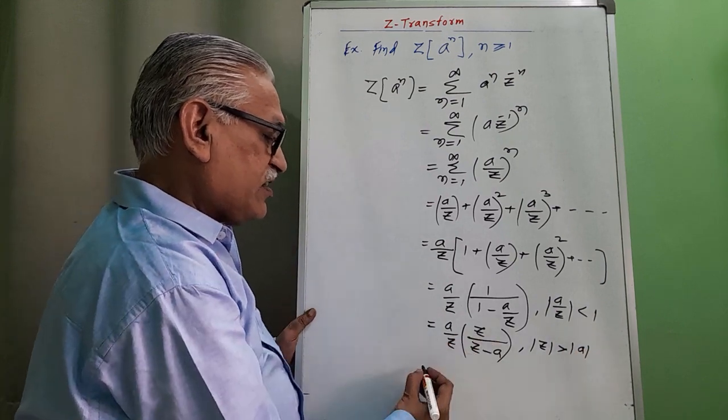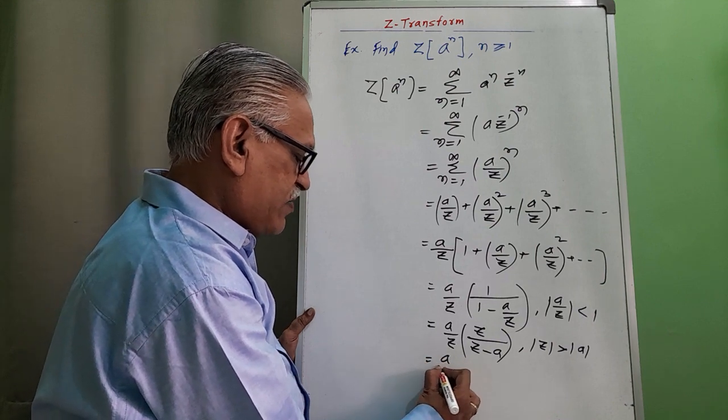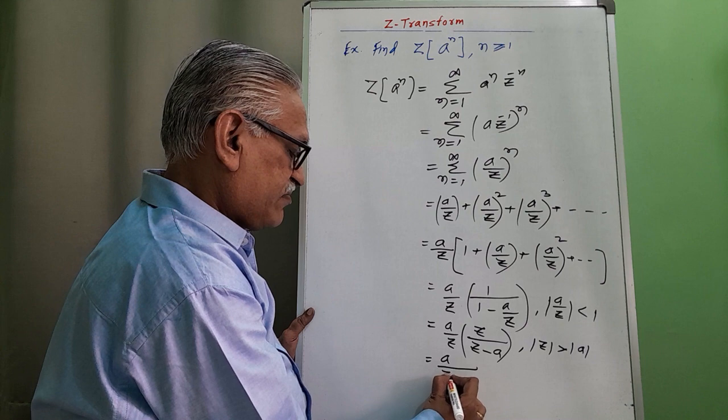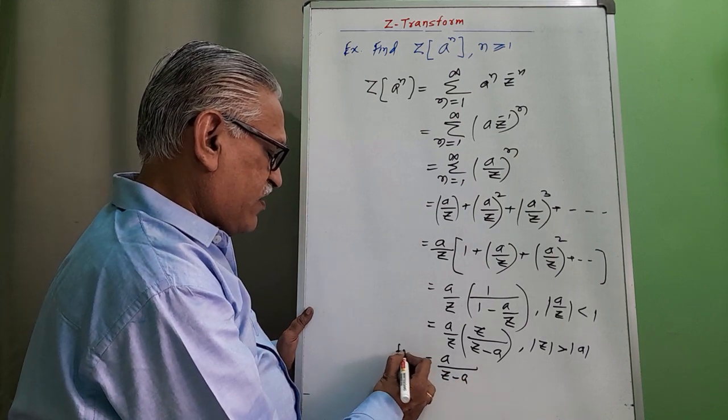Z gets cancelled and we get the final answer as A divided by Z minus A, as required Z transform.